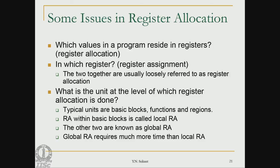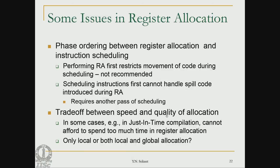Global register allocation requires much more time than local, and all register allocations are carried out at compile time. Phase ordering between register allocation and instruction scheduling is a well-known problem. Instruction scheduling reorders instructions to eliminate pipeline hazards. If register allocation is done first, code movement during instruction scheduling is restricted. If scheduling is done first, spill code introduced during register allocation is not scheduled. In practice: schedule first, then allocate registers, then schedule again to handle spill code.